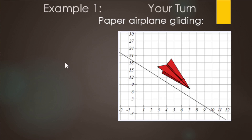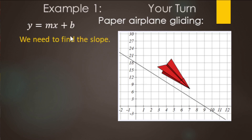Here we have an airplane gliding. We can easily see what the y-intercept is — it's going to be 18. So we know we're going to use slope-intercept form and we already know the y-intercept. We just need to find the slope.